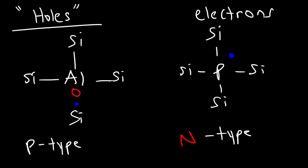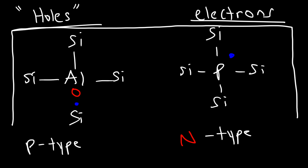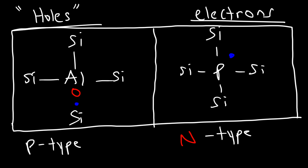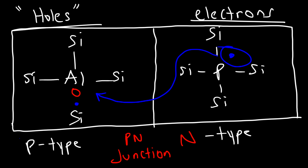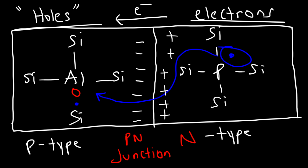What happens if we take a p-type material and combine it with an n-type material? If we put these two together, you create something known as a p-n junction. The contact between the p-type and the n-type semiconductor creates the p-n junction. The electrons from the n-type will drift to the p-type crystal to fill in the holes. As the electrons move to the p-type side, there is a buildup of negative charge on the left side of the p-n junction, and the right side becomes electron-deficient, creating a positive charge. This is the basis for constructing devices like diodes, transistors, and even solar cells.